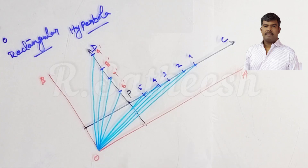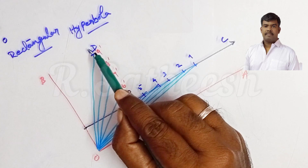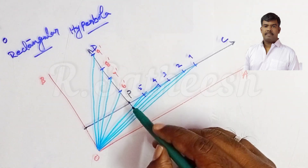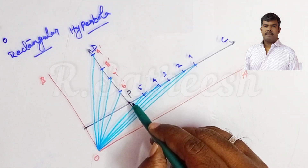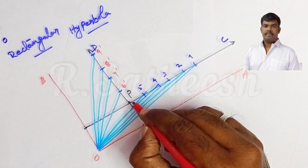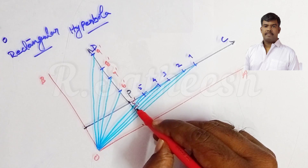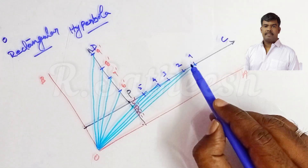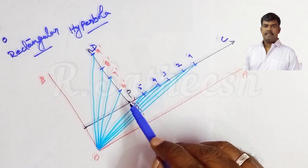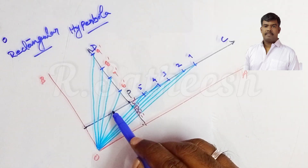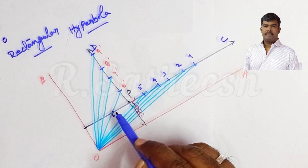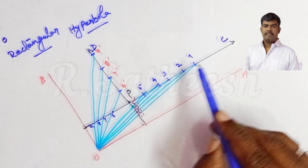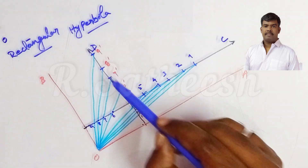The vertical points are assigned with dashes: 9-dash, 8-dash, 7-dash, 6-dash. Where O5 intersects on the horizontal line, that is considered 5-dash. Similarly 4-dash, 3-dash, 2-dash, 1-dash. On the horizontal line, points 1, 2, 3, 4, 5, P are located. Where O6-dash intersects the horizontal line, that gives point 6; O7-dash gives 7, O8-dash gives 8, O9-dash gives 9.